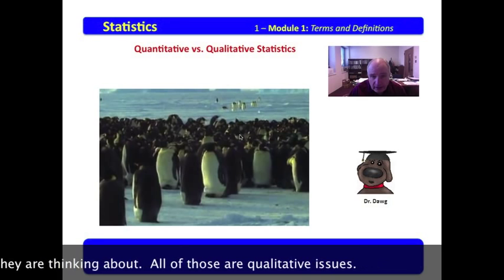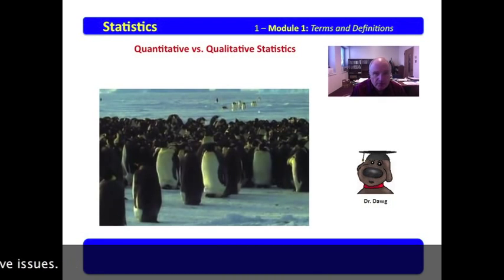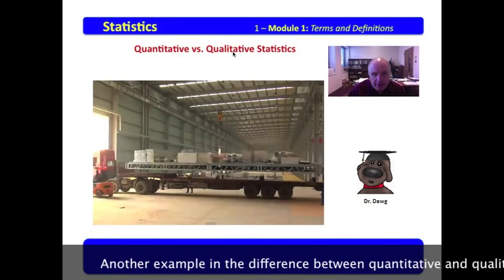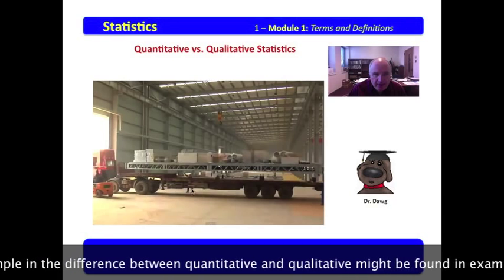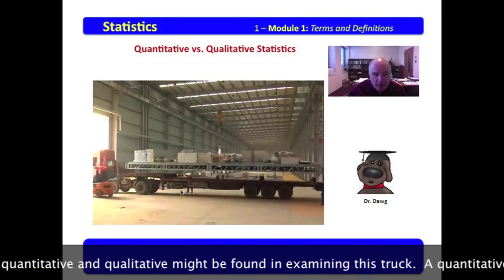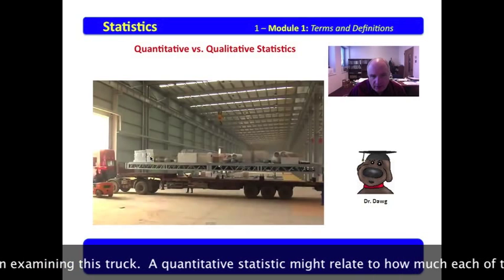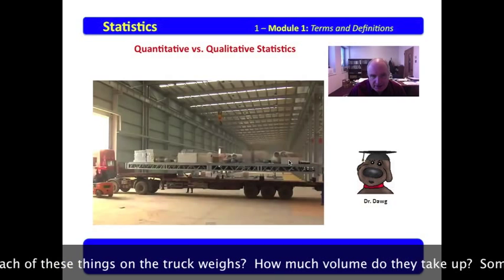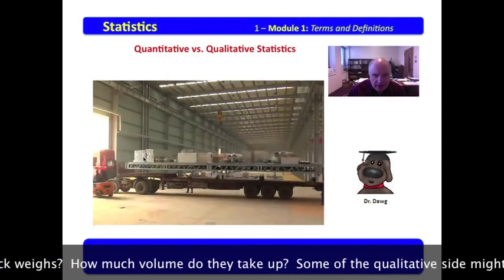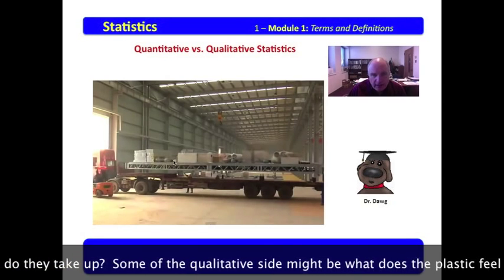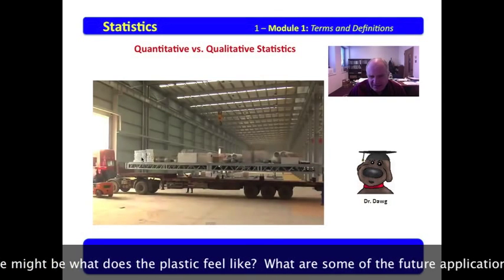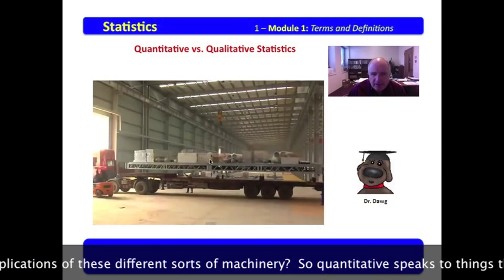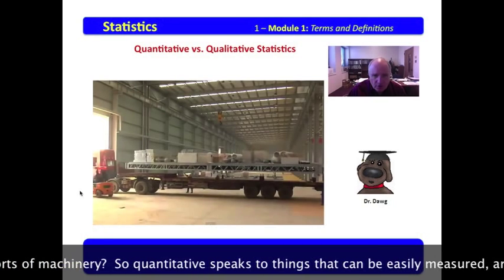Now, we might discuss what these penguins are talking about to each other, what they're thinking about. All of those are qualitative issues. Another example of the difference between quantitative and qualitative might be found in examining this truck. A quantitative statistics might relate to how much each of these things on the truck weighs. How much volume do they take up? Some of the qualitative side might be what does the plastic feel like? What are some of the future applications of these different sorts of machinery?